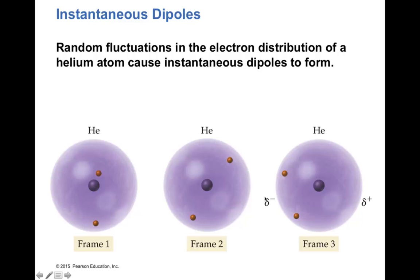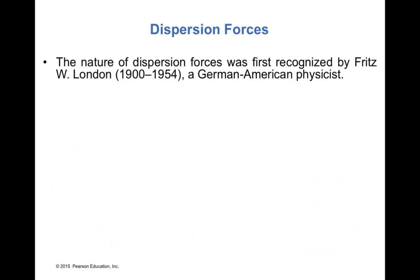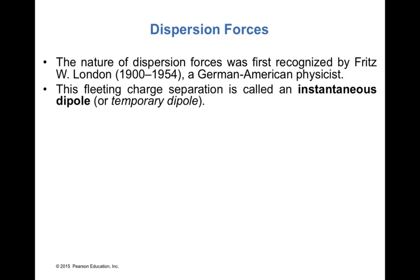Both electrons in the same region induce a delta-negative (partial negative charge) on that side, and a partial positive charge on the other side. Due to the random movement of electrons in an atom, they can at some point all be in the same region, causing this instantaneous dipole — also called a temporary dipole. The nature of dispersion forces was recognized by Fritz London, a German-American physicist.